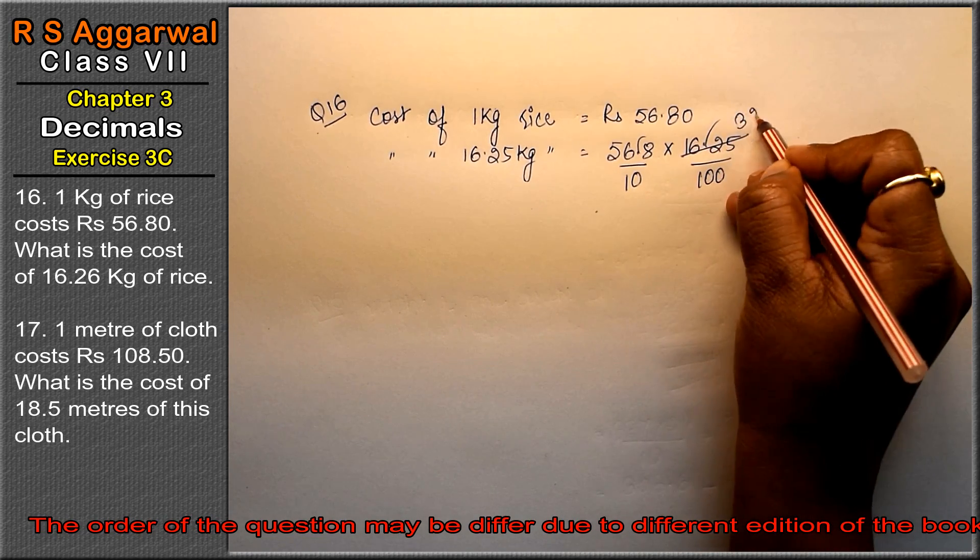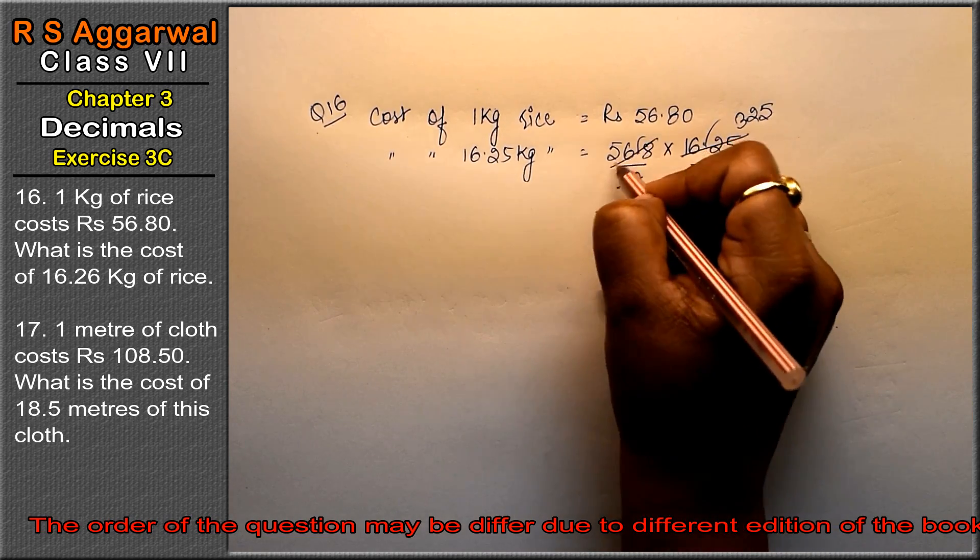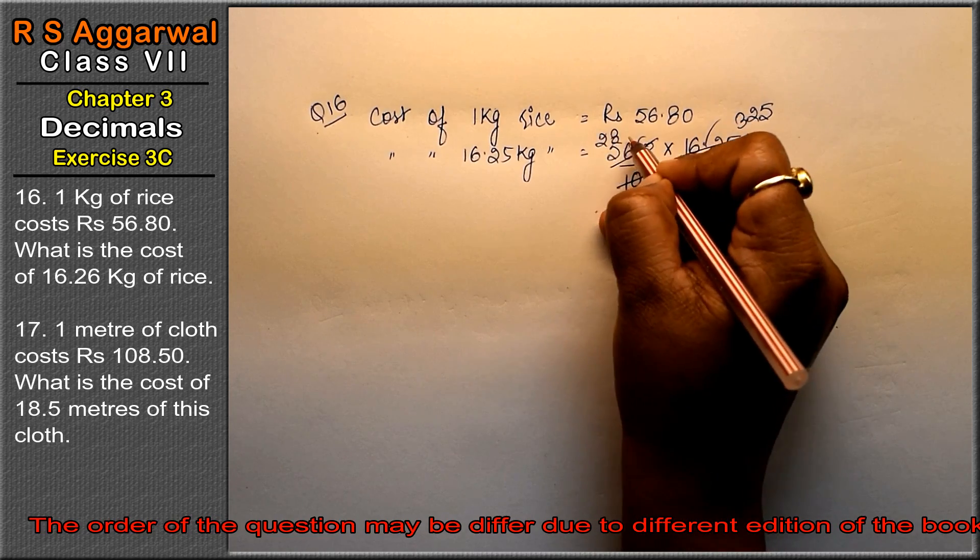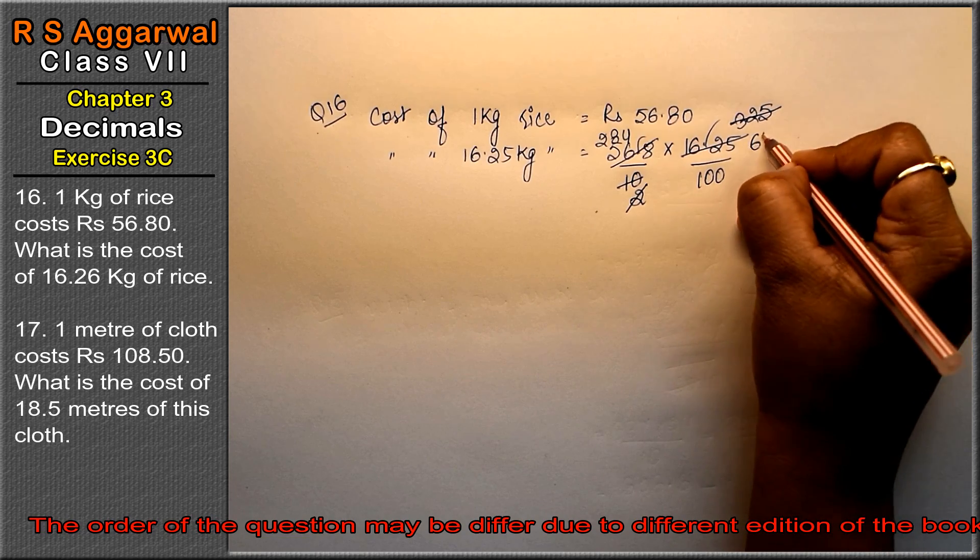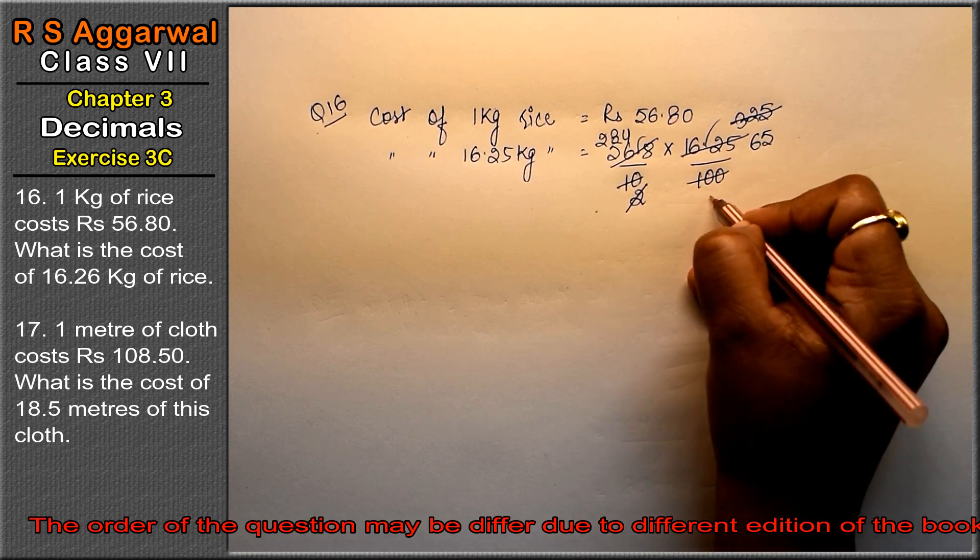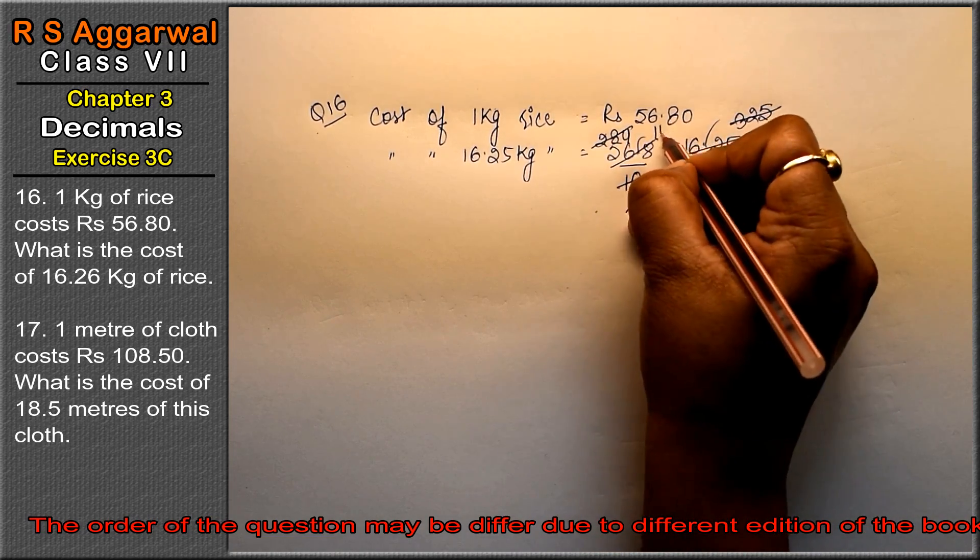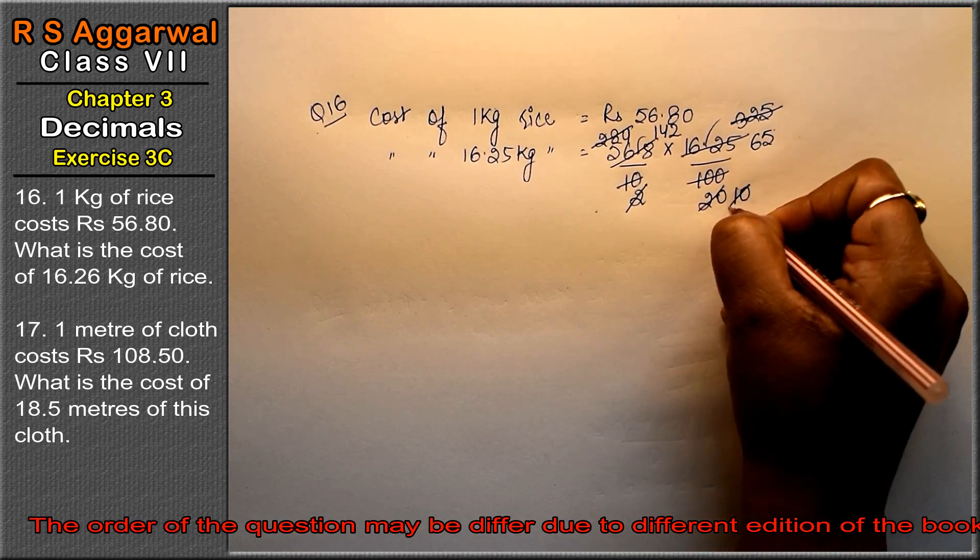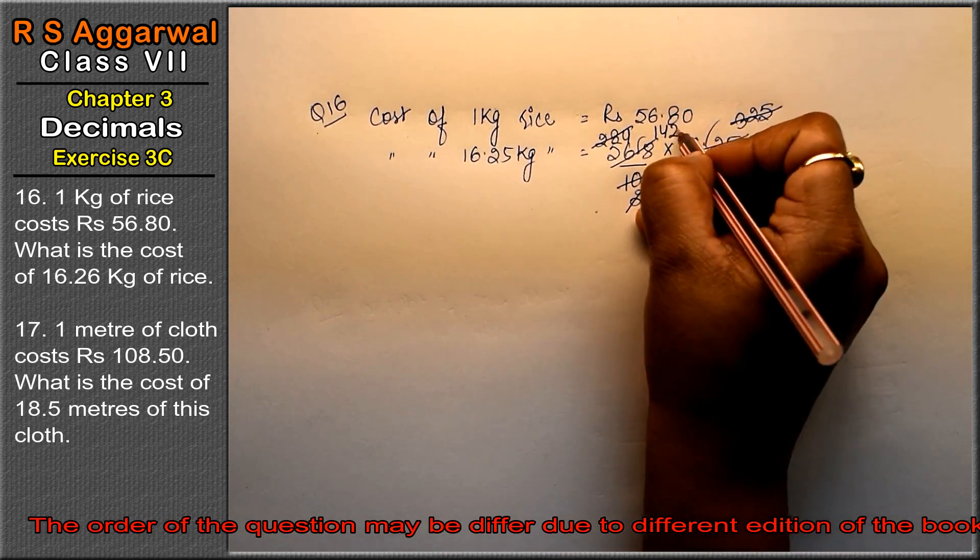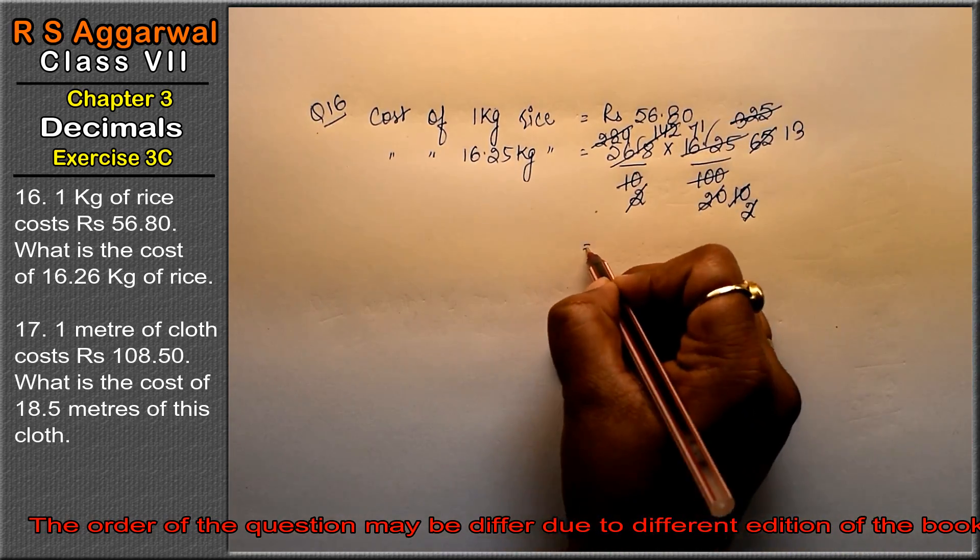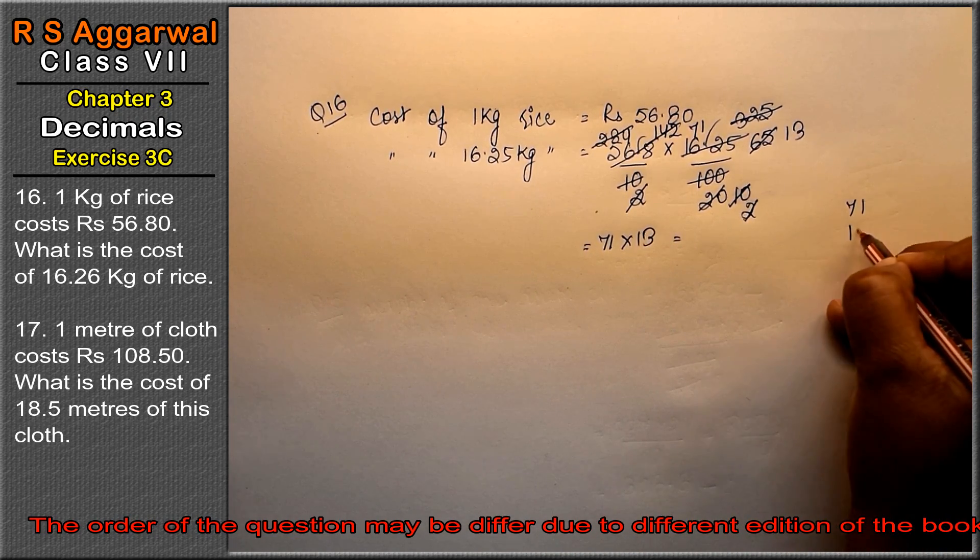We have the cost of 16.25 kg of rice. Now see: 5 threes are 15, 5 twos are 10, and 5 fives are 25. 5 twos are 10, 2 ones are 2, 2 twos are 4, 2 eights are 16, 2 fours are 8. Again, 5 sixes are 30, 5 fives are 25, 5 twos are 10. And 0, 2 ones are 2, 2 ones are 2, 2 fours are 8, 2 twos are 4. Again, 5 twos are 10, 5 ones are 5, 5 threes are 15. 2 ones are 2, 2 sevens are 14, 2 ones are 2.